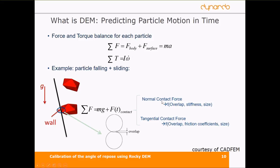We have the normal contact force, which is a function of the overlap, the stiffness, and the size of the particle. And the tangential contact force, which is dependent on the frictional coefficients and the size again. So we have a lot of different parameters which have influence on our calculation and which should be calibrated to get trustworthy results.